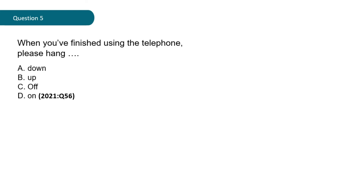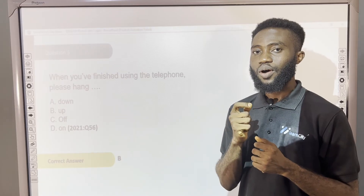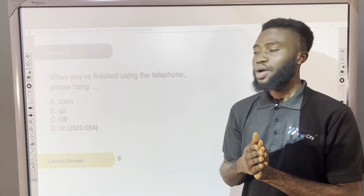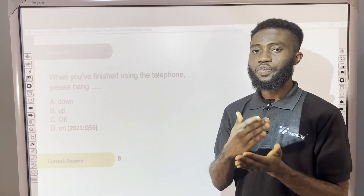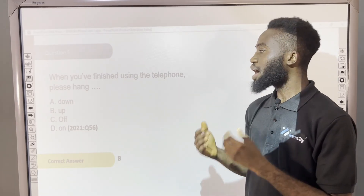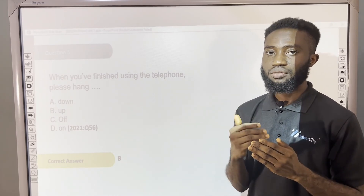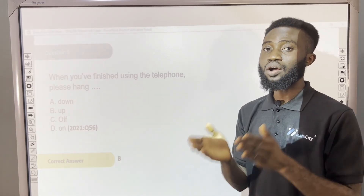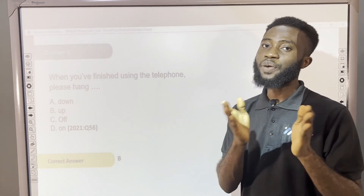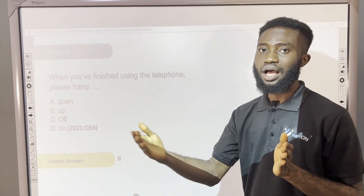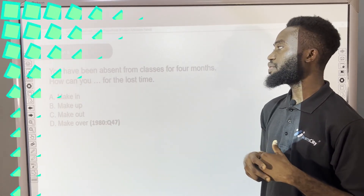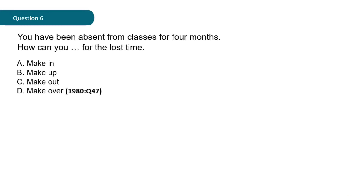The correct answer is option B — please hang up. To hang up is to disconnect. To hang down is to be placed upside down. To hang off is to be put on a cliff. It will not be option D, hang on, because to hang on means you have to wait patiently until the other caller responds.